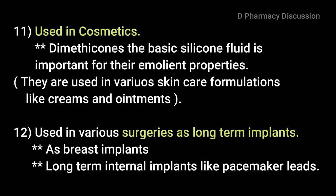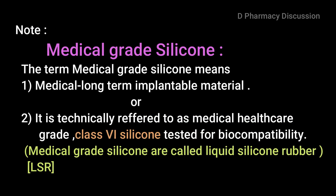Silicones are used in cosmetics and surgical implants. Dimethicone, the basic silicone fluid, is important for its emollient properties and is used in various skincare formulations like creams and ointments. Silicone polymers are also used in various surgeries as long-term implants — some examples include breast implants and long-term internal implants like pacemaker leads.